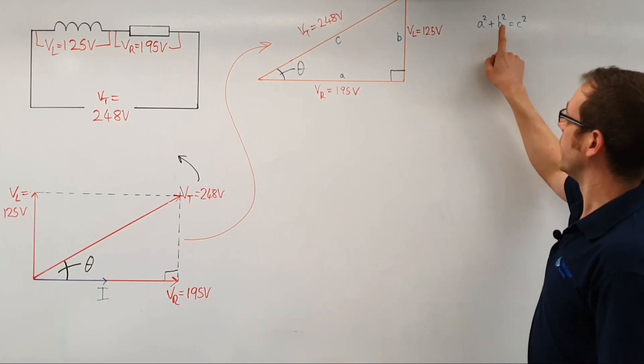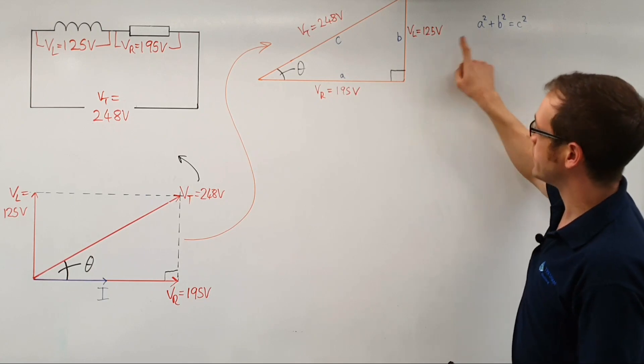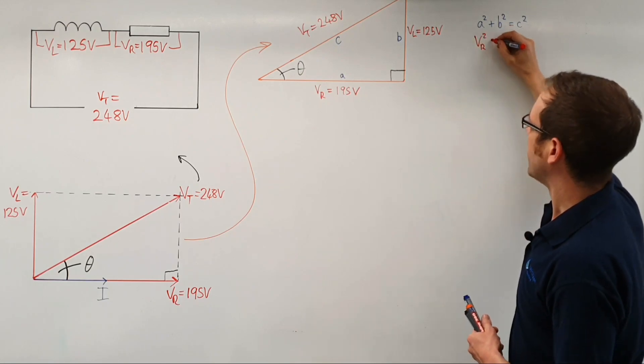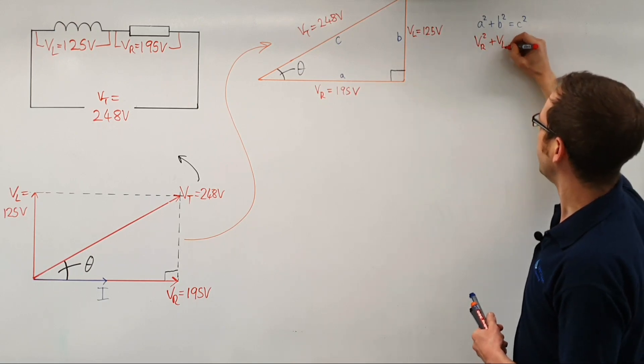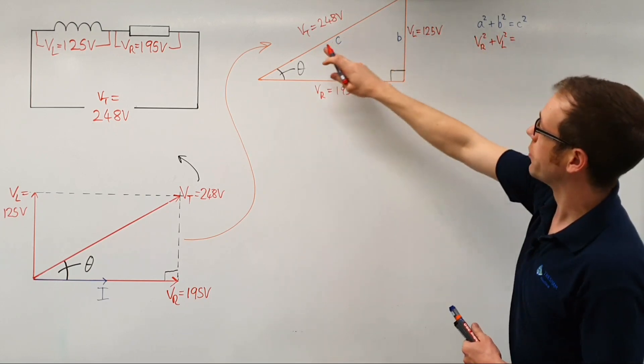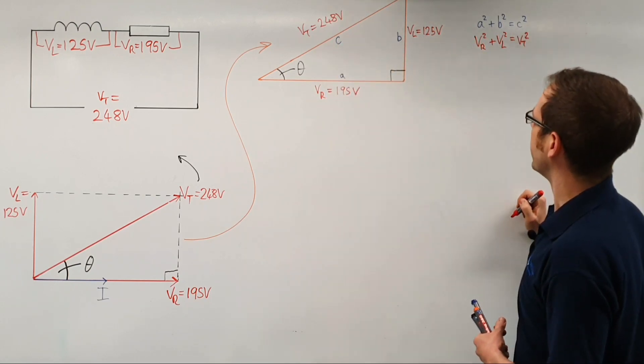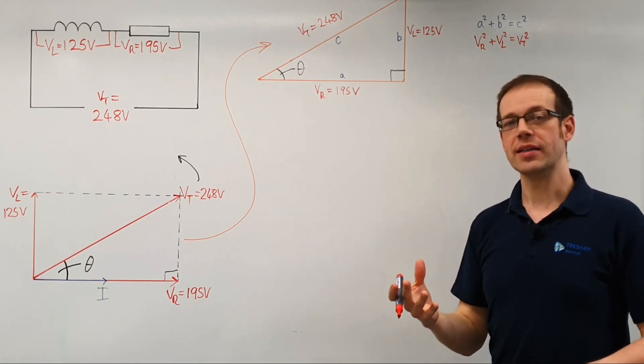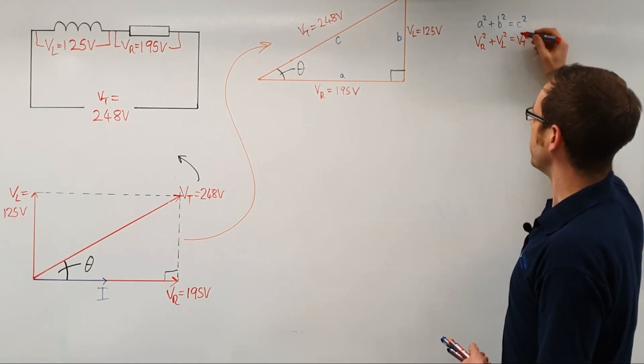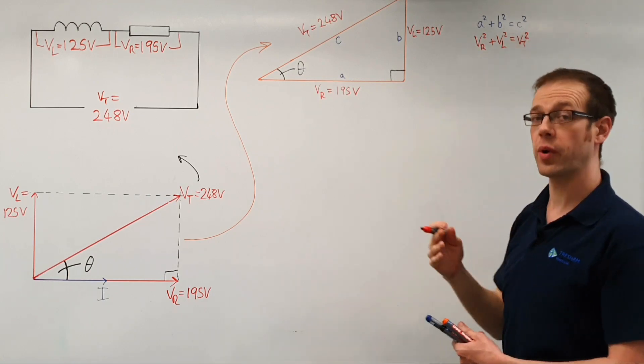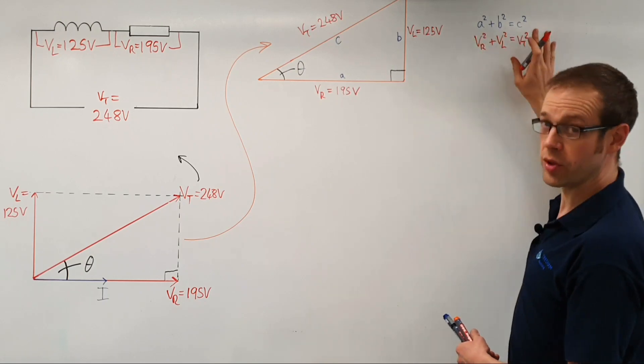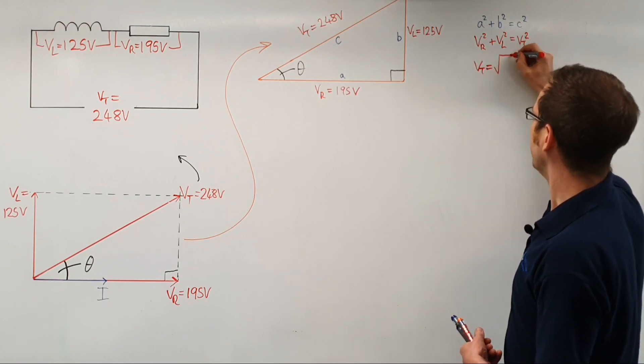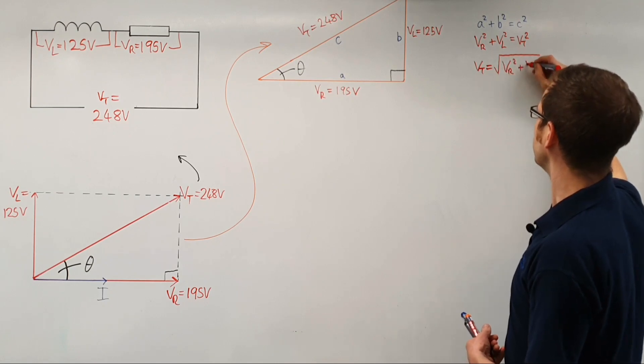What we're going to do now is, instead of having a squared plus b squared equals c squared, we're going to replace these letters with their corresponding sides. So a will become VR squared, and we're going to add that onto b, which becomes VL squared, and we're going to say that is equal to VT squared. Generally speaking, we're not interested in finding VT squared; we're interested in finding VT by itself. So we need to square root both sides. We'll say VT is equal to the square root of VR squared plus VL squared.